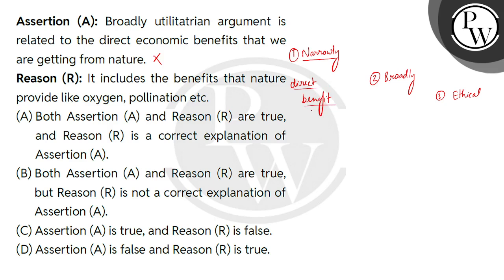Direct benefits include food, shelter, firewood, fiber, construction materials, industrial products, and even medicine obtained from plants. So this direct benefit that we are getting from nature falls under the narrowly utilitarian argument.